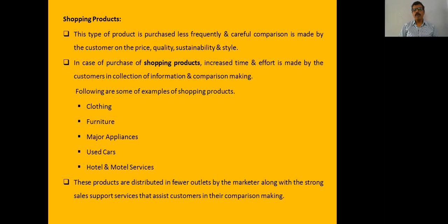The second category of consumer products is called shopping products. Shopping products include clothing, furniture, appliances, used bags, etc. A moderate amount of effort and information collection is involved in purchasing these products.